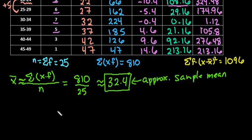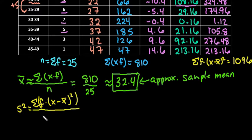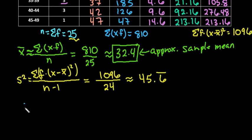So now we have all of the information that we need to find the variance. Remember because we are dealing with a sample, we use s squared. So s squared is equal to the sum of the frequency times x minus x bar squared. So it's the frequency times the deviations squared, divided by n minus 1. So we would take 1096 and divide it by 24. And the 24 came from 25 minus 1. When I plug this into my calculator, I get approximately 45.6 repeated. So this would be our variance.